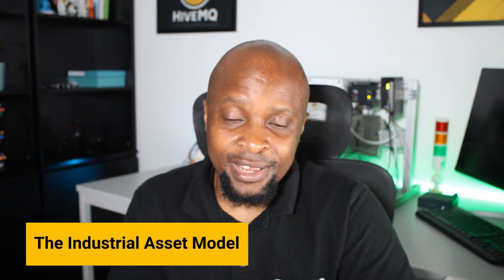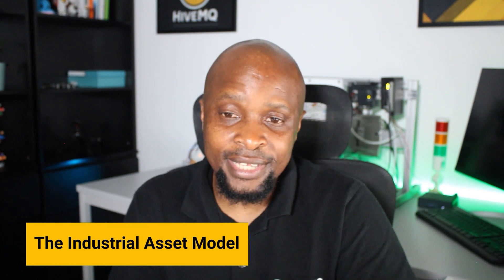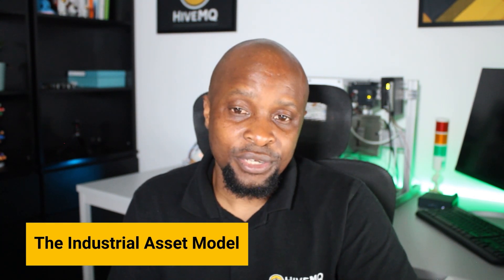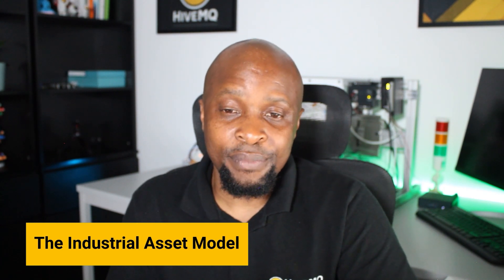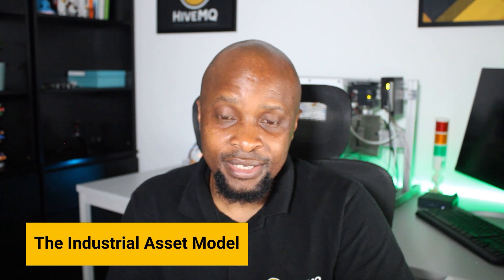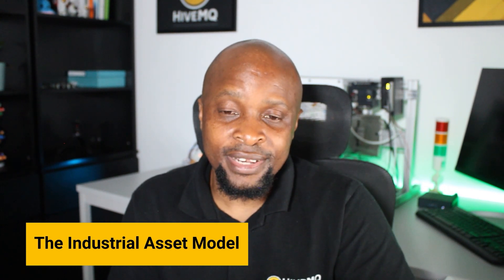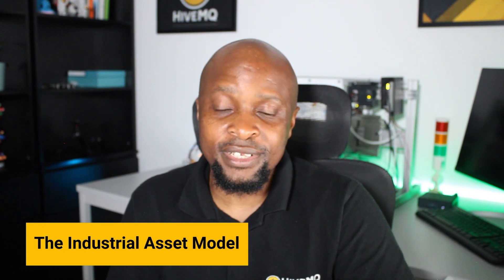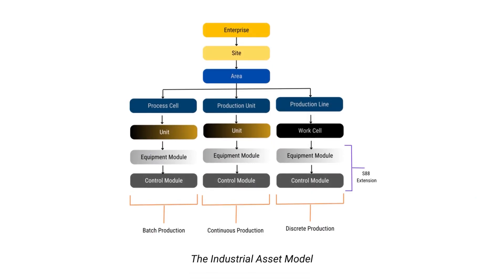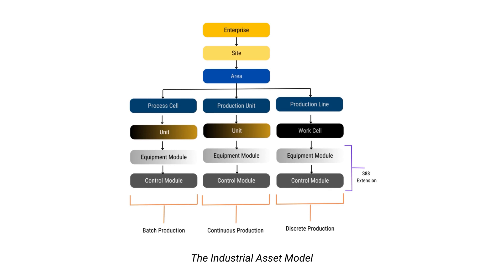ISA-95 serves as the globally recognized standard for managing enterprise and control systems. It comprises both models and a standard vocabulary which can be utilized to identify the necessary information that needs to be transferred between various systems. This includes the transfer of data between sales, finance, and logistics systems and those involved in production, maintenance, and quality. This standard ensures smooth integration and data exchange, streamlining operations across different levels of an organization.